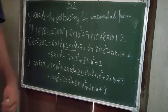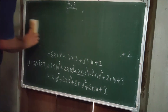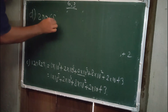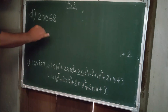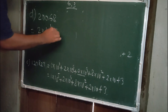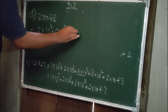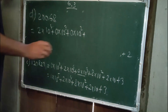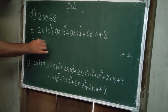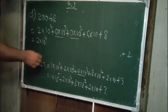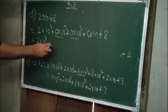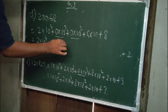Next number (d) is 20068. The expanded form becomes: 2 into 10 to the power 4, plus zero into 10 to the power 3 — no value — plus zero into 10 to the power 2 — no value, because zero multiplied by any number is always zero — plus 6 into 10, plus 8. Understood? Clear.